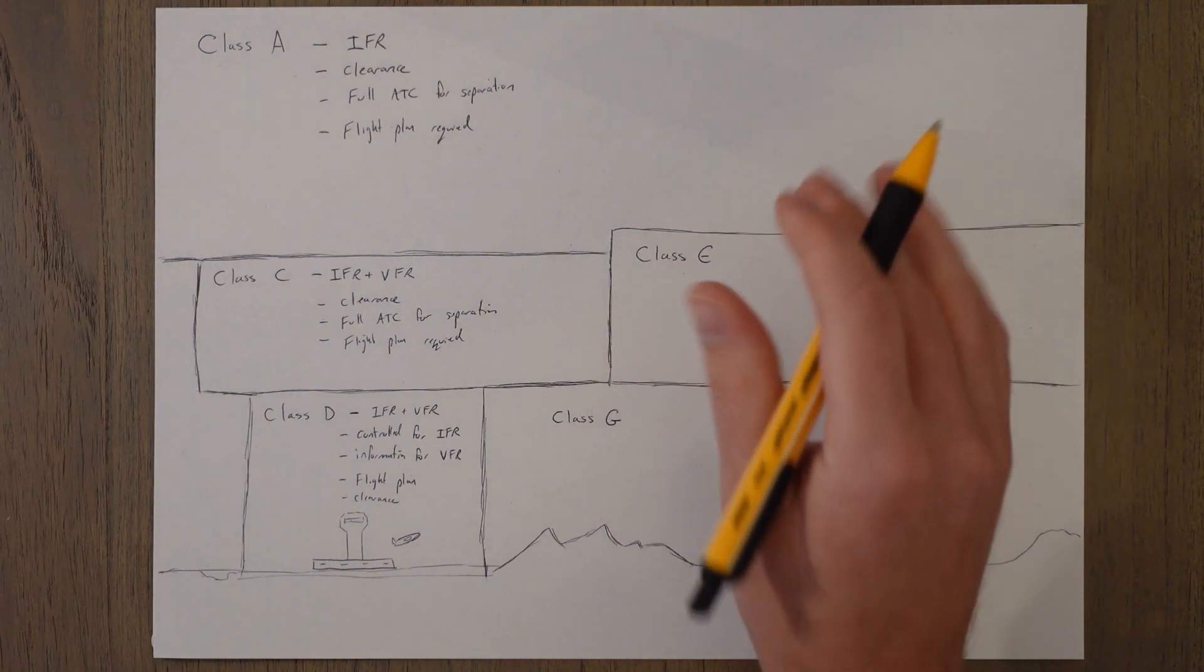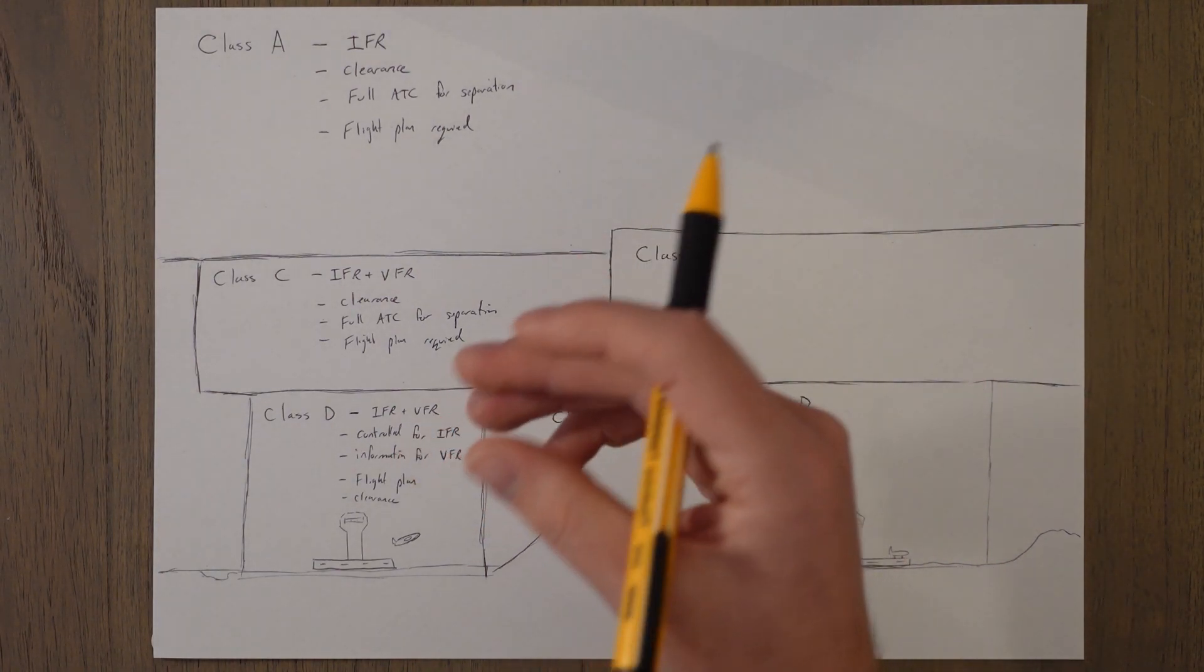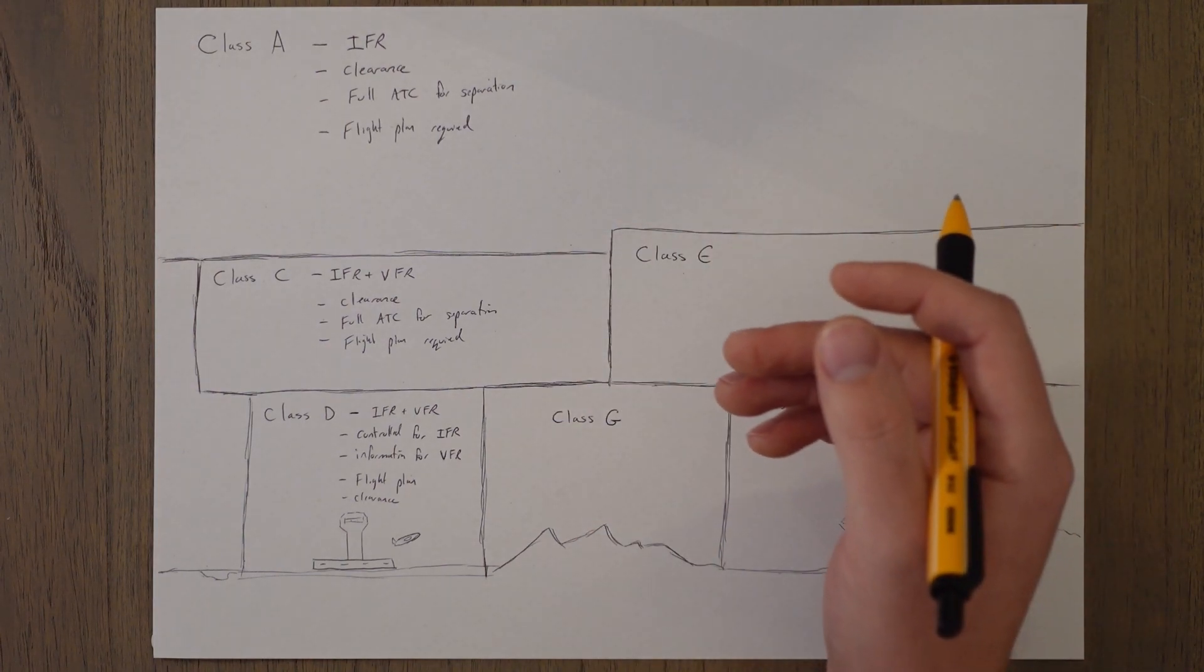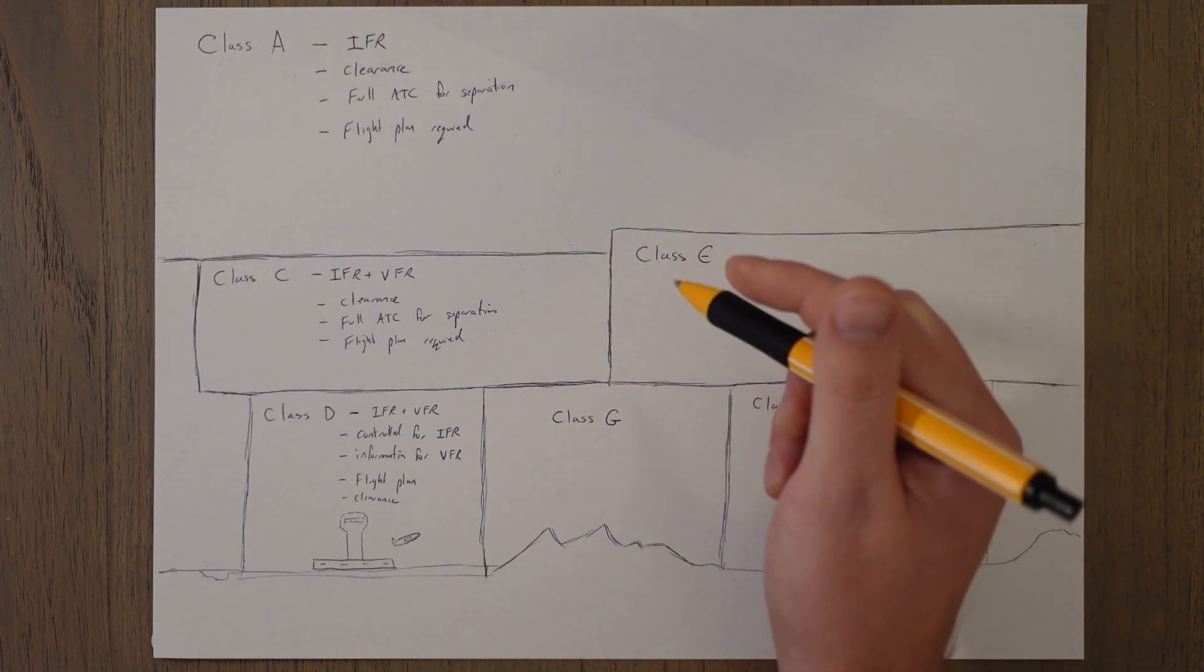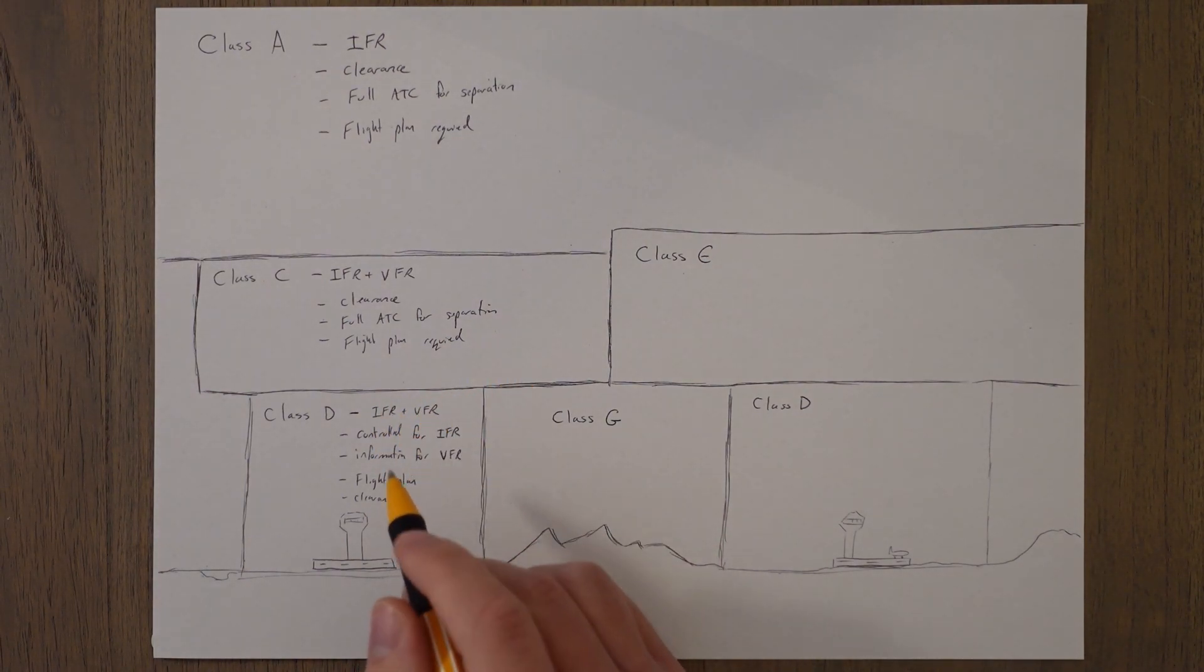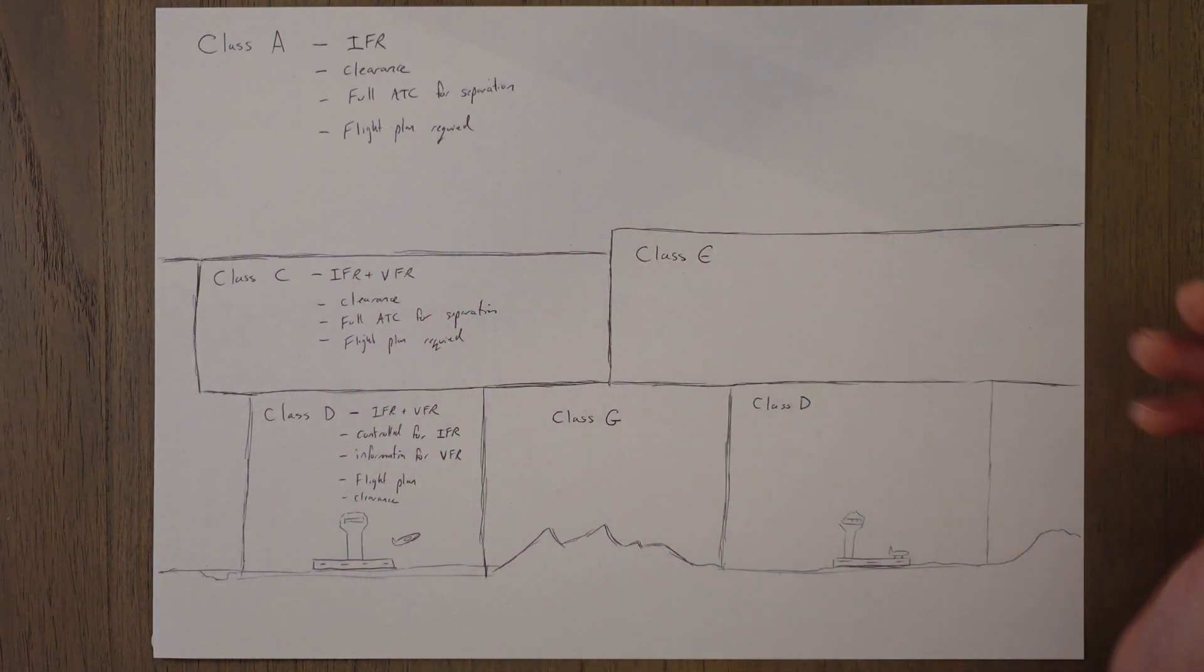Then we have the information flying IFR to look out for them in that area and be like right that's them over there we're nowhere near them we're safely separated. Between VFR and VFR they just get information on the other traffic similarly and they have to do all the separation themselves. Because there's IFR traffic in this zone you will need a flight plan to fly within it and cross through it wherever you're doing even if you're VFR.